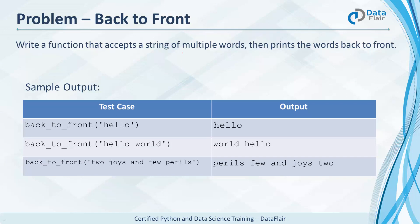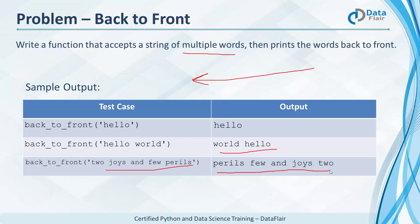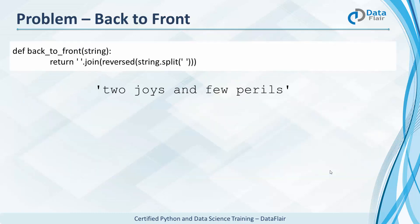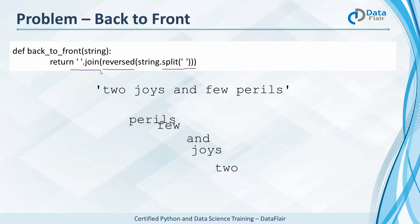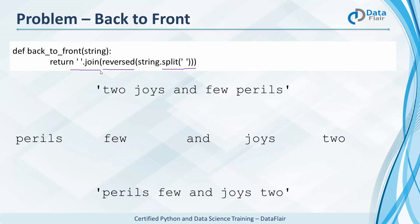Now let's do some problems on lists. Can we write a function that takes a string of multiple words and prints them out back to front while maintaining white space? For example, 'hello' gives 'hello', 'hello world' gives 'world hello', and 'too joys and few perils' gives 'perils few and joys too'. Pause your screen and try this out. The solution first splits the string around spaces, reverses the list, then joins the items with a space — split, reverse, join — and you have the string back to front.